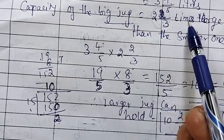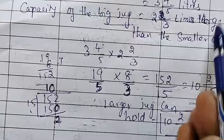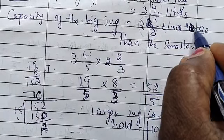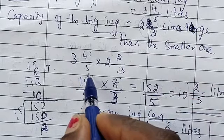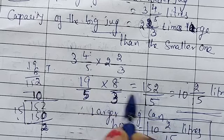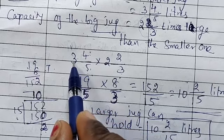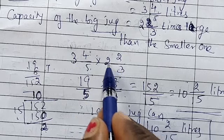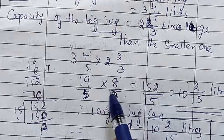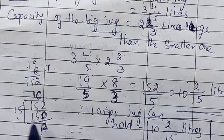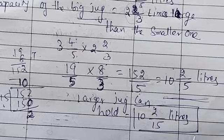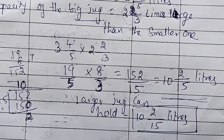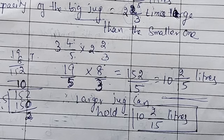2 and 2/3 times larger than the smaller one. So 3 and 4/5 into 2 and 2/3: 19/5 × 8/3 = 152/15. Dividing 152 by 15 gives 10 remainder 2, so 152/15 = 10 and 2/15. The larger jug can hold 10 and 2/15 liters. Thank you. For more videos, please subscribe to our channel.